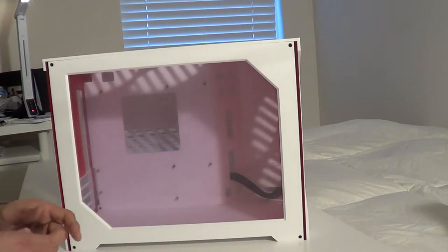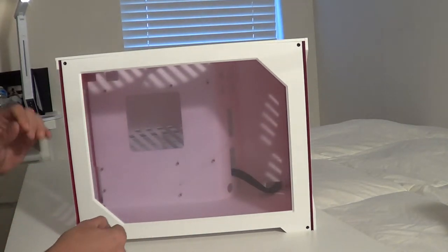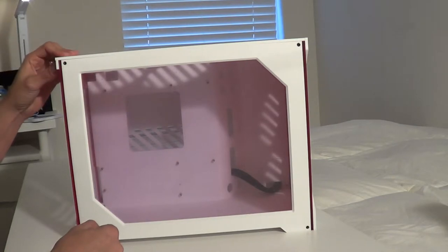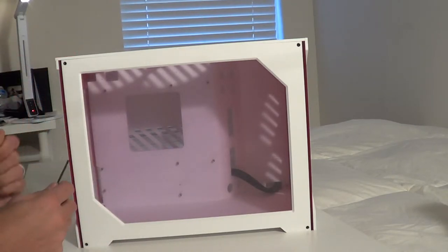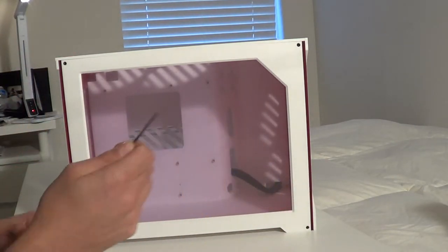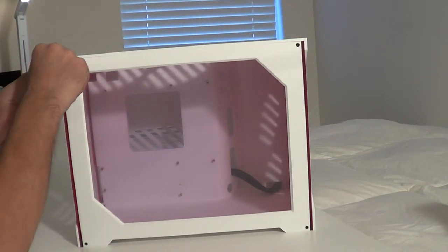Alright, to get the side panel off of this, now remember this is a fairly nice case. Every panel on here can be taken off. So, in order to remove these screws, you will need an Allen key. I'll whiz this off real quick, shouldn't take too long.